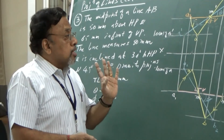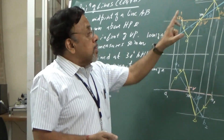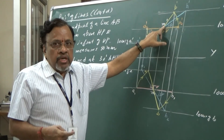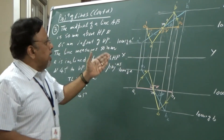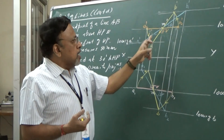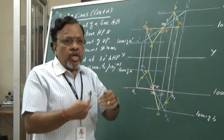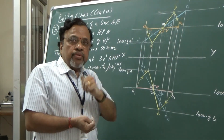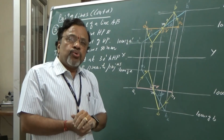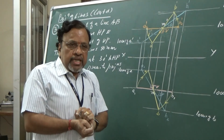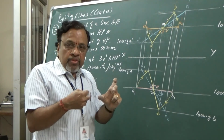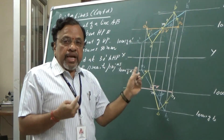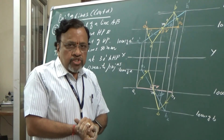In this particular problem, we have done the projection with M as the reference point instead of end A or end B. A similar approach applies if any other intermediate point is given — for example, if a point is 30 mm from A and 70 mm from B on a 100 mm line, you locate that point and use it as your reference for the entire construction.